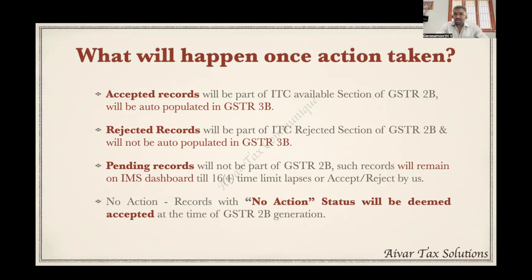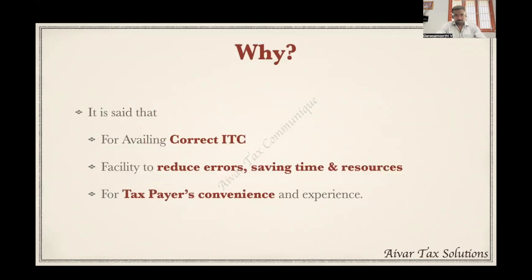What happens once action is taken? There are three actions plus a 'no action' state. When no action is taken, it follows the current scenario. Accepted records will be auto-populated in GSTR-3B. Rejected records will not be auto-populated in GSTR-3B, so we need not take ITC and reverse as per Circular 170. Pending records will not be auto-populated in GSTR-3B — they remain in the IMS dashboard until the Section 16(4) time limit lapses. If no action is taken, it will be considered as deemed accepted.